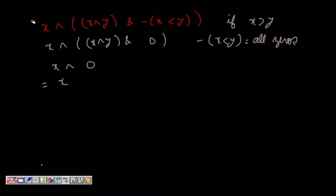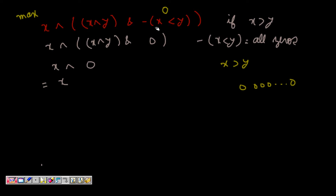Now for the maximum expression: when x is greater than y, the comparison (x < y) becomes false, which is 0. The negation -(0) is all zeros. ANDing any number with all zeros gives zero. So x XOR 0 = x. Because x is greater than y, the maximum is correctly returned as x.